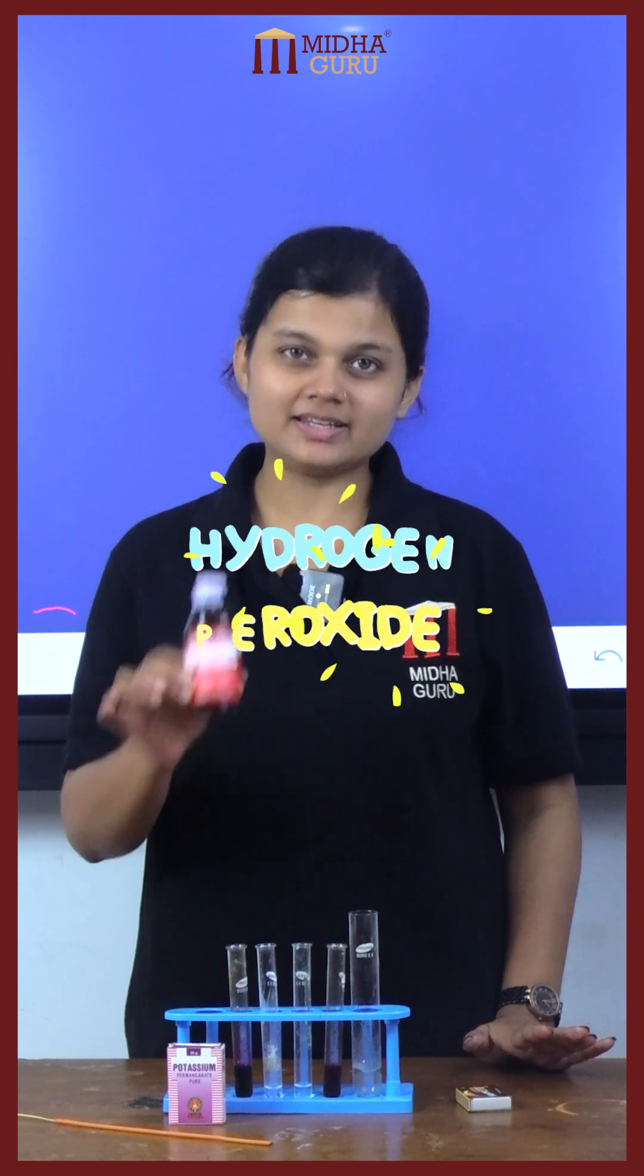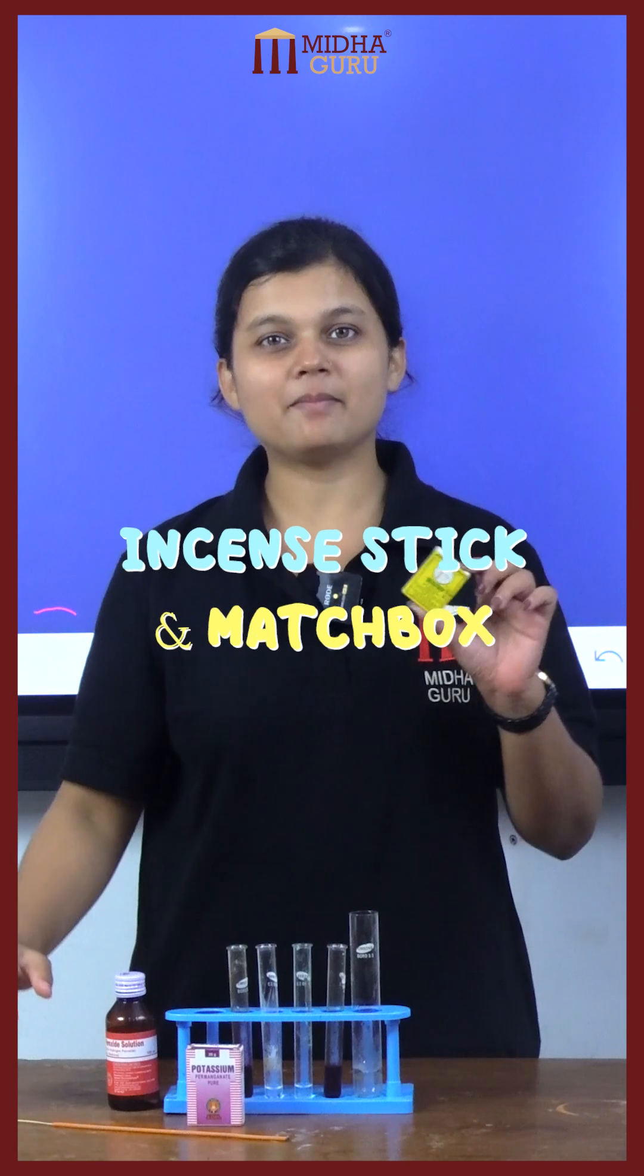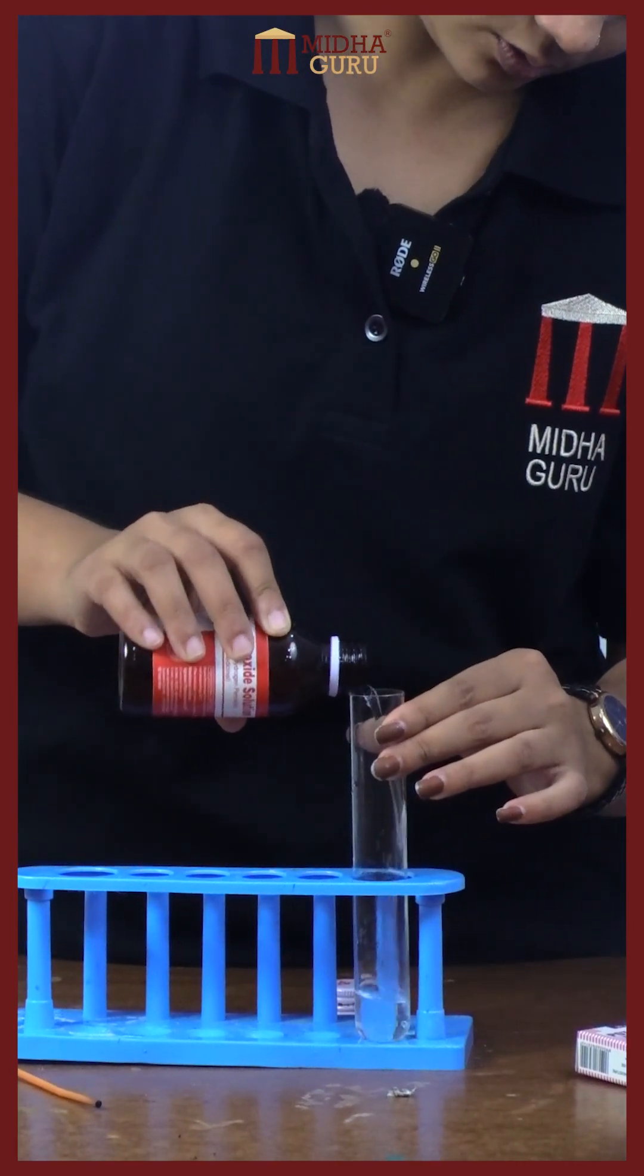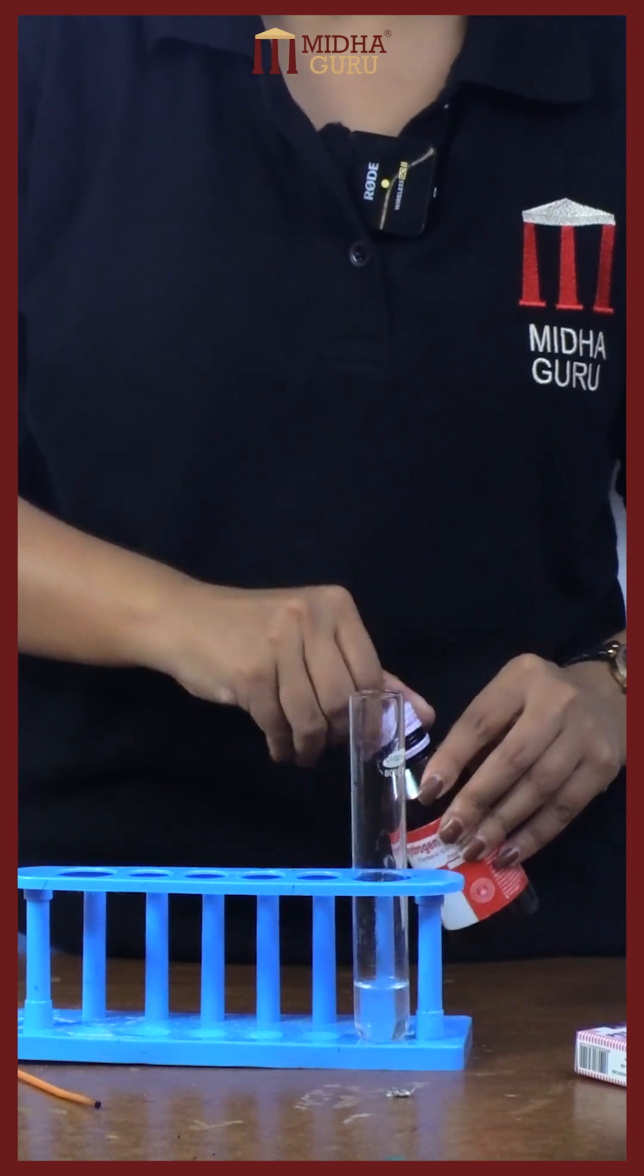Do you want to know how this happens? For that I need hydrogen peroxide, potassium permanganate, an incense stick, and a matchbox. Now I'm going to pour some hydrogen peroxide into the test tube and add some potassium permanganate to it.